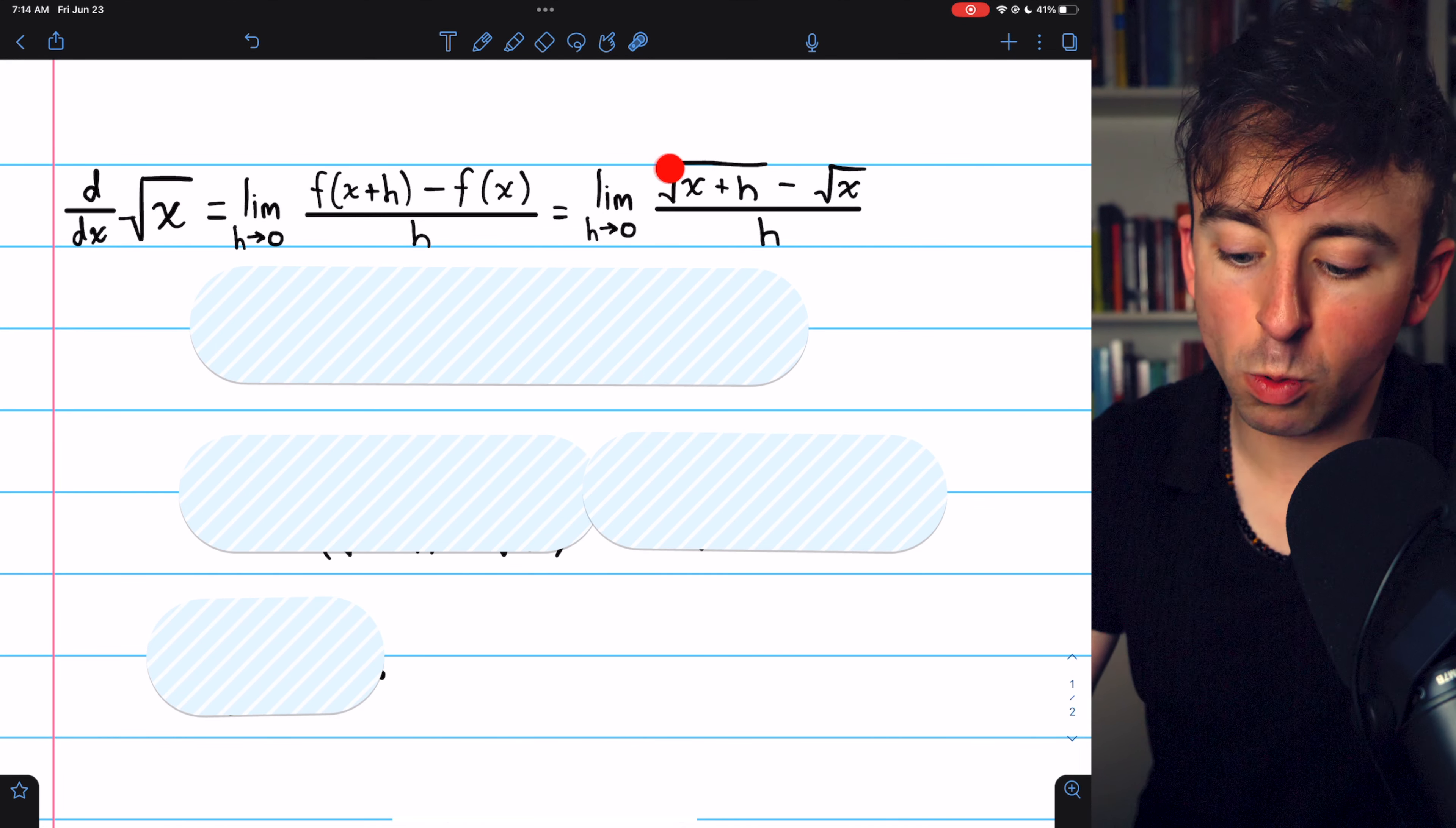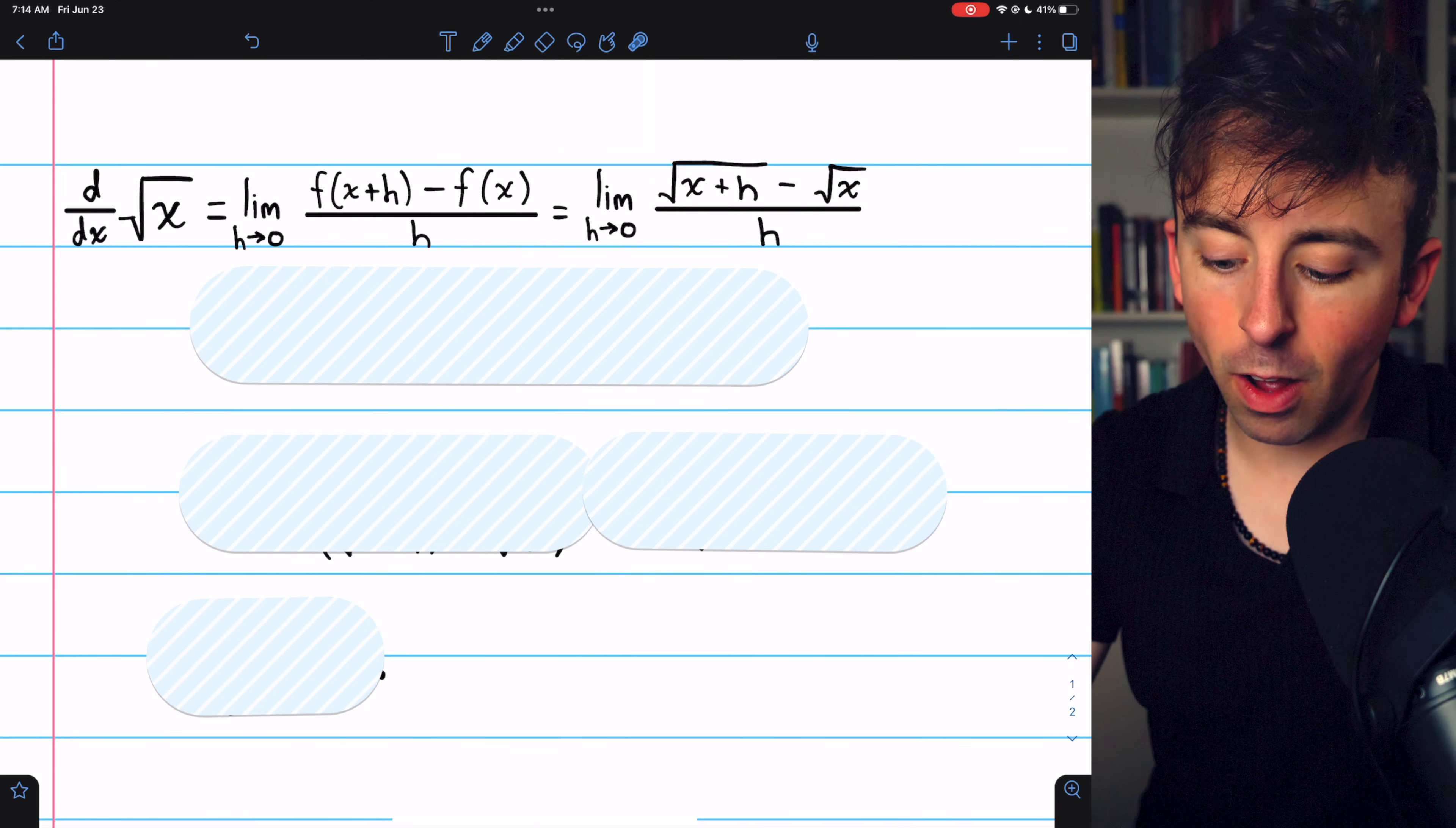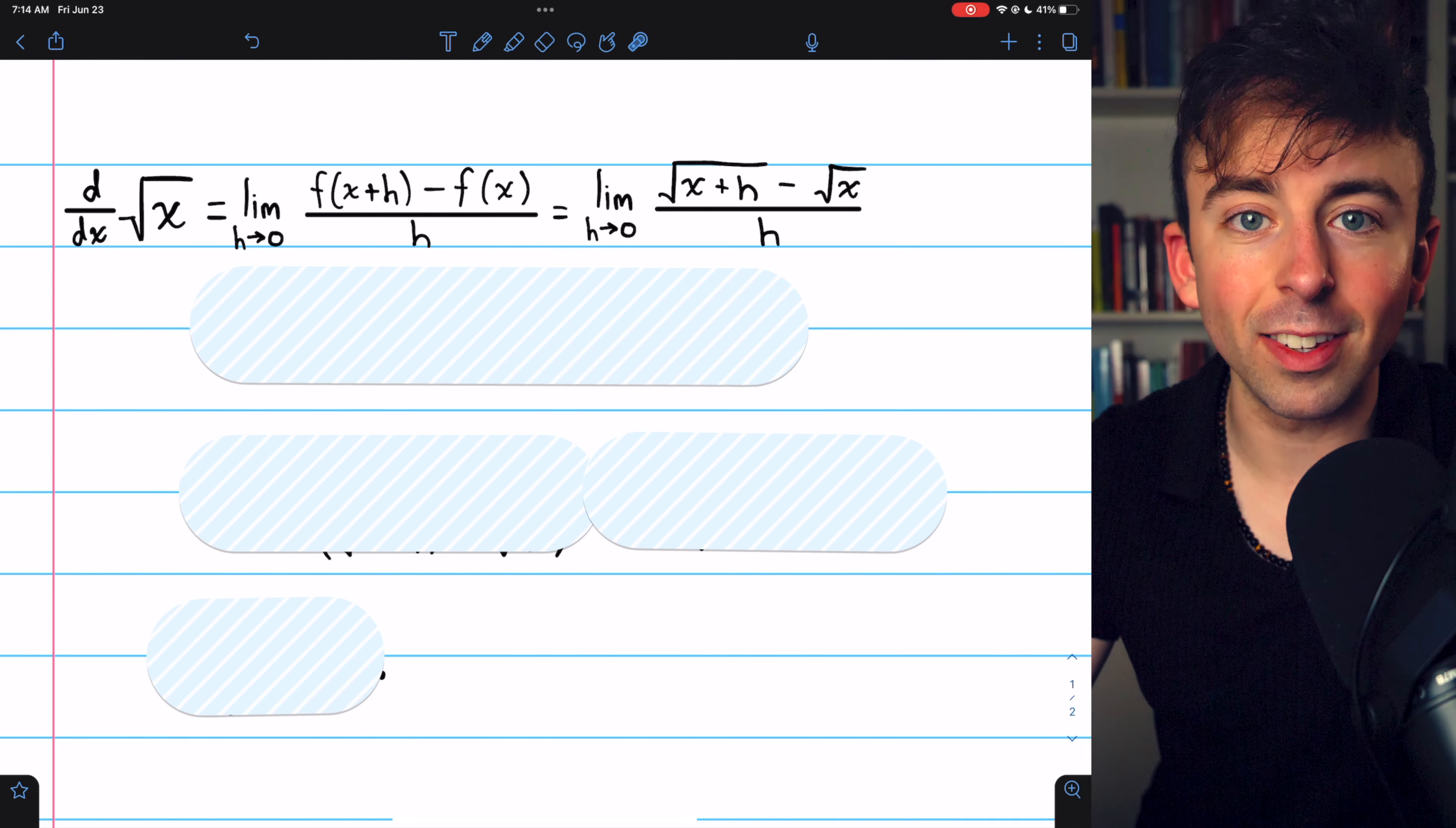So we have the square root of x plus h minus the square root of x all divided by h, and we're taking the limit as h approaches zero.